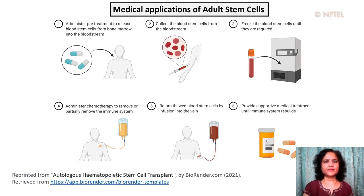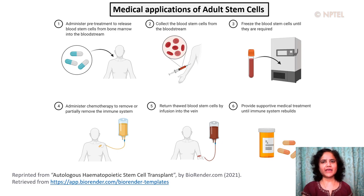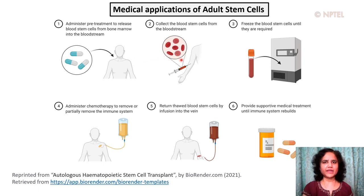The property of stem cells to repair or replenish damaged tissue has application in medical treatments. An example is hematopoietic stem cell transplantation, also referred to as bone marrow transplantation. This procedure is useful after chemotherapy of cancer patients that kills rapidly dividing cancer cells as well as dividing normal cells, including the hematopoietic stem cells. A variation of this procedure is autologous hematopoietic stem cell transplantation, in which the stem cells are obtained from the patient before chemotherapy and stored, and then after treatment is over, they can be returned to the patient to help produce new cells.